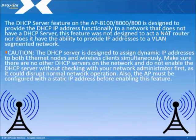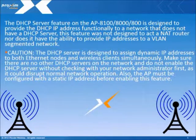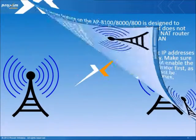Caution! The DHCP server is designed to assign dynamic IP addresses to both Ethernet nodes and wireless clients simultaneously. Make sure that there are no other DHCP servers on the network and do not enable the DHCP server without checking with your network administrator first, as it could disrupt normal network operations. Also, the AP must be configured with a static IP address before enabling this feature.